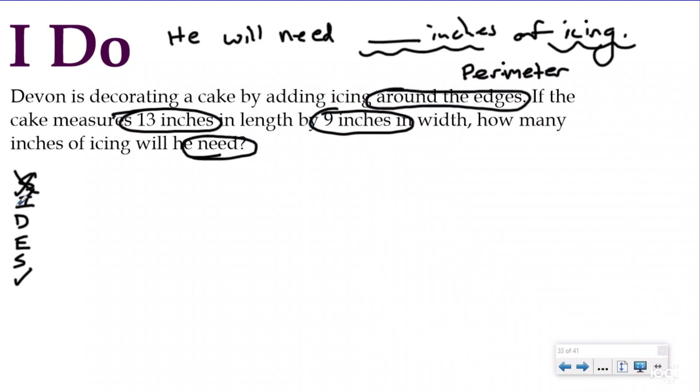So I've identified. I now think I'm doing a perimeter question, which means I need to develop my plan by drawing my picture. So I'm going to draw his rectangular cake. And again, I knew it was a rectangle because they only gave me two different dimensions. My length is 13. My width is 9.